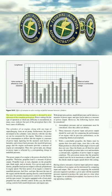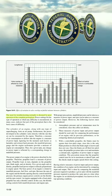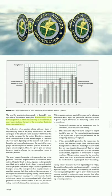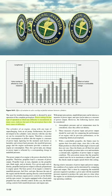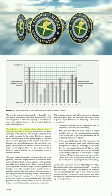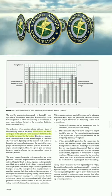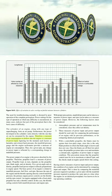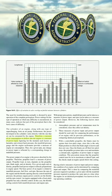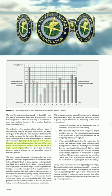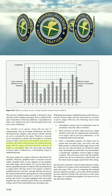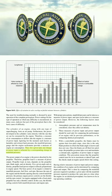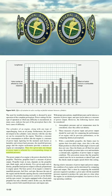The need for troubleshooting is normally dictated by poor operation of the complete power plant. The cylinders of an engine, along with any supercharging, form an air pump, and the power developed varies directly with the rate that air is consumed. A manifold pressure gauge and tachometer provide a measure of engine air consumption. For a given RPM, any change in power input is reflected by a corresponding change in manifold pressure.